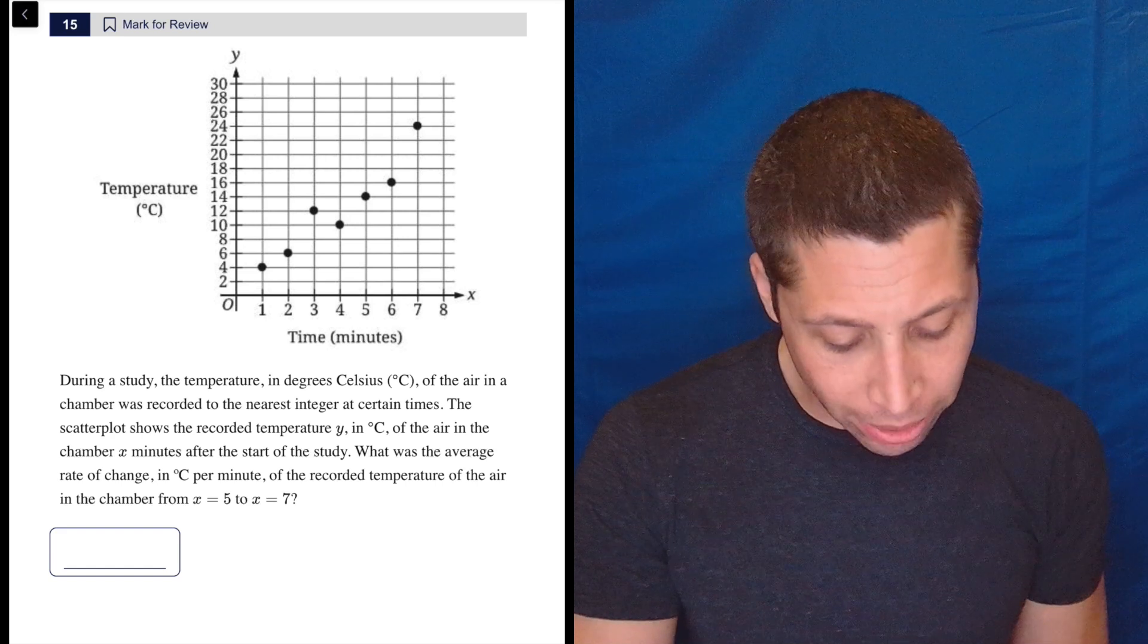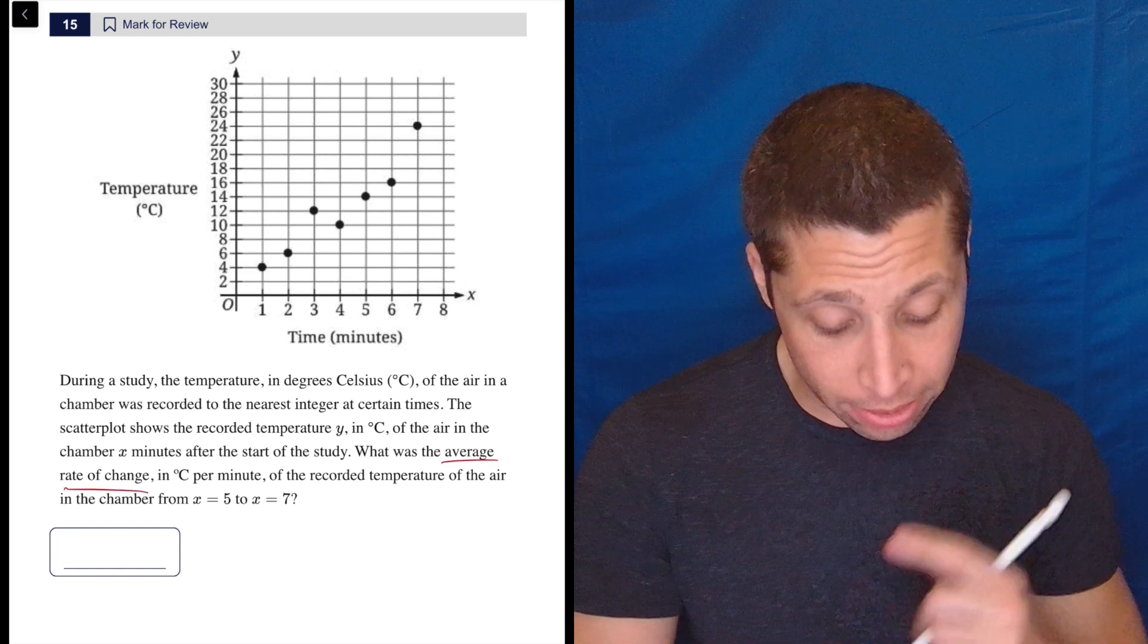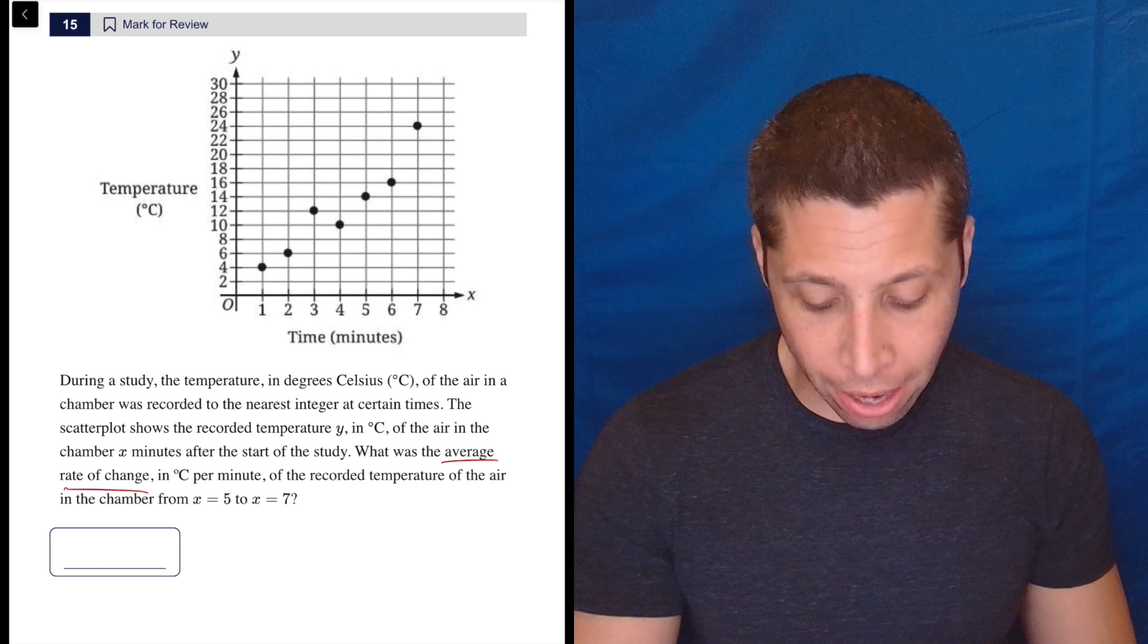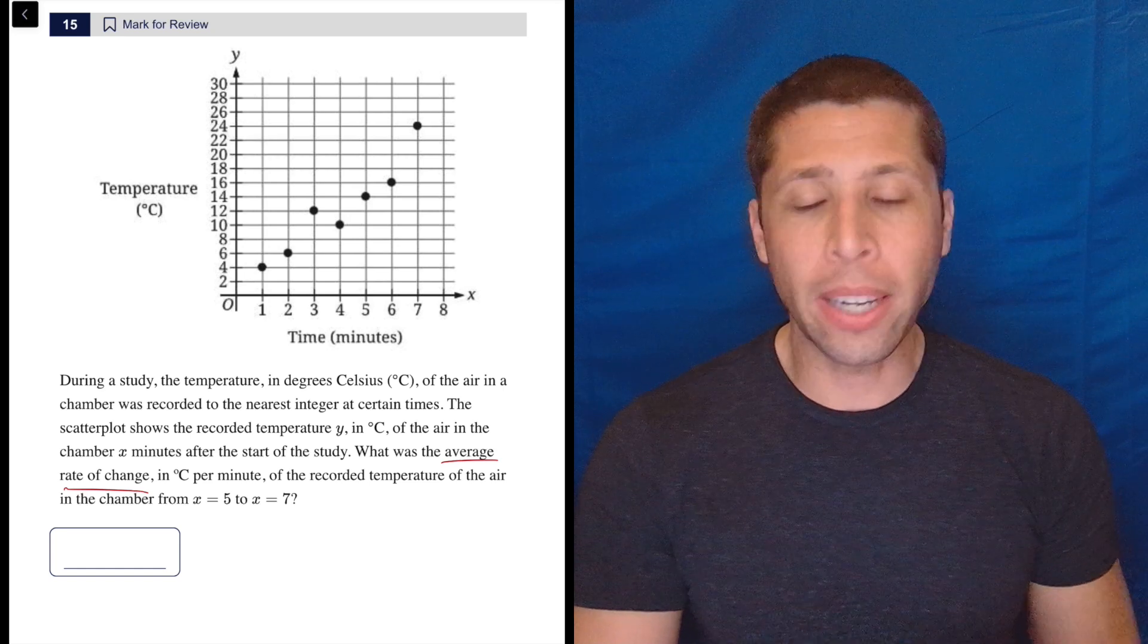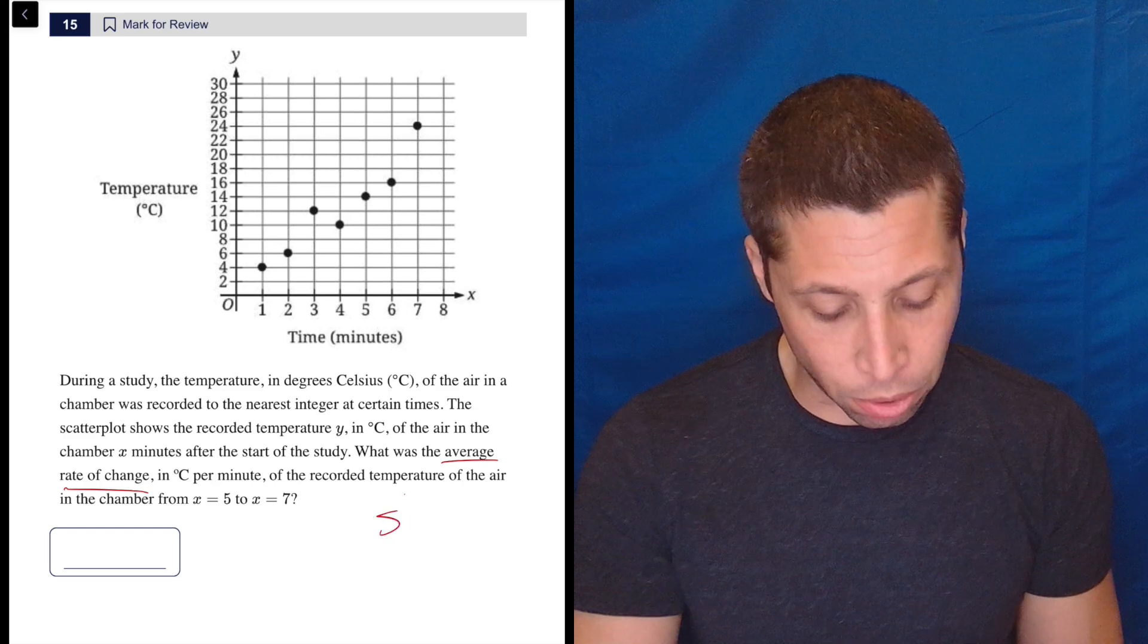What was the average rate of change in degrees Celsius per minute of the recorded temperature of the air in the chamber from x equals 5 to x equals 7? So this is a very complicated way of asking for the slope.